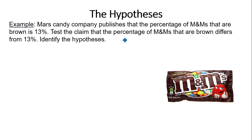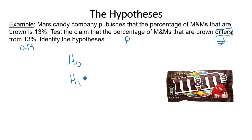Last example: Mars Candy Company publishes that the percentage of M&Ms that are brown is 13 percent. Test the claim that the percentage of brown M&Ms differs from 13 percent. Percentages and proportions go together, so 13 percent means 0.13. "Differs" means different, which means not equal to. Since not equal to does not include equality, it goes with the alternative hypothesis: p not equal to 0.13. The opposite of not equal to is equal to, so the null hypothesis is p equals 0.13.